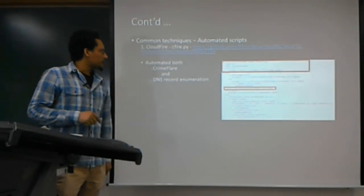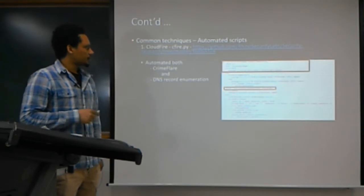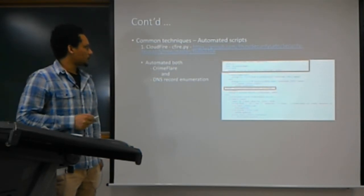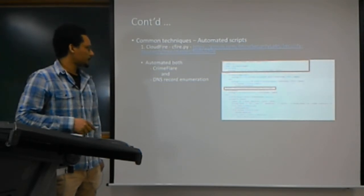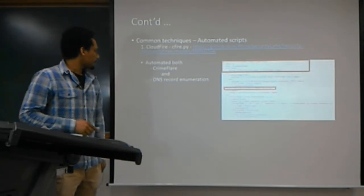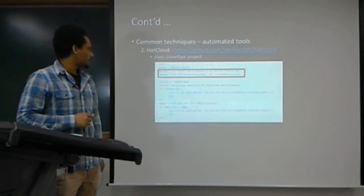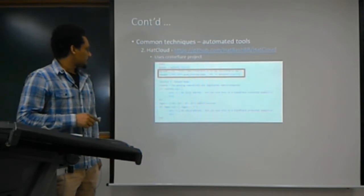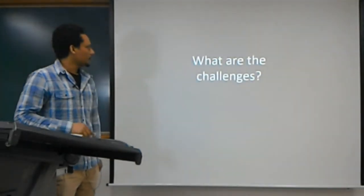There are also automated tools that combine these methods. One tool from Reno Security Labs automates and scripts the whole process for command-line use. Another tool similarly reveals and exposes the real IP address, also automating the CrimeFlare project lookup.